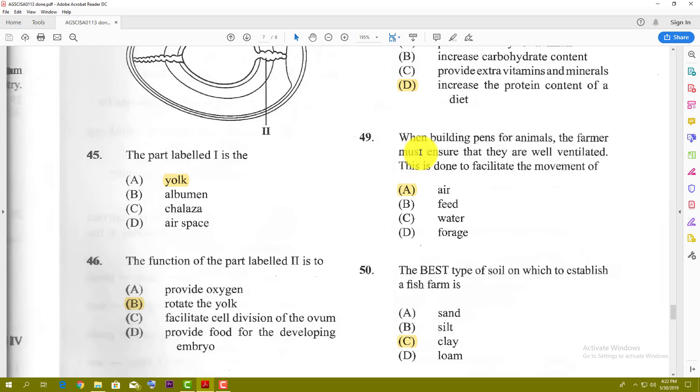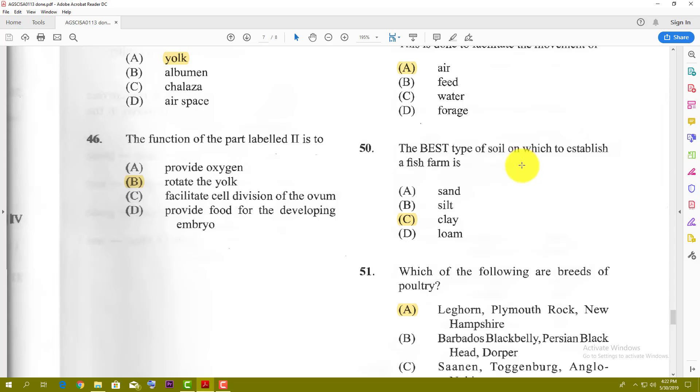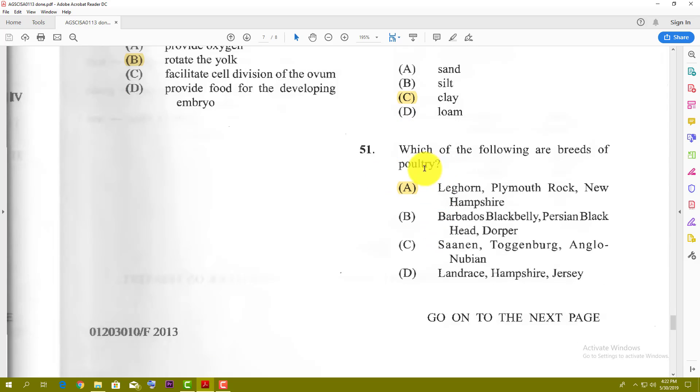Number forty-nine: when building pens for animals, the farmer must ensure that they are well ventilated. This is done to facilitate the movement of air. Ventilation is all about vents for air. Number fifty: the best type of soil on which to establish a fish farm is clay. Clay soil is the best soil to use. All the others might require you to put in some artificial plastic to prevent the water from going under, but clay—water can get locked easily. Water doesn't pass through as readily. Number fifty-one: which of the following are breeds of poultry? Of course, it's A—the Leghorn, the Plymouth Rock, and New Hampshire. Barbados Black Belly and Persian Black are sheep. Saanen, Toggenburg, and Nubian are goats. Landrace, Hampshire, and Jersey—the Landrace is a pig, but Jersey is a cow. So yes, the best answer is A.